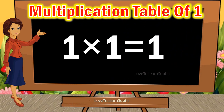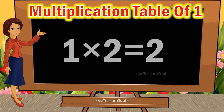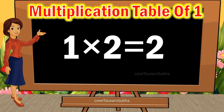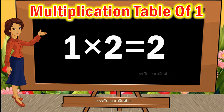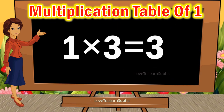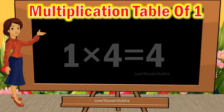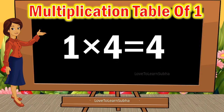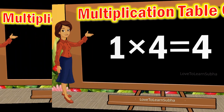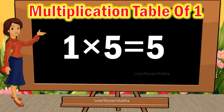1 1s are 1, 1 2s are 2, 1 3s are 3, 1 4s are 4, 1 5s are 5,